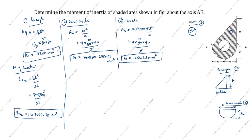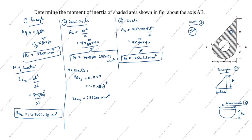Next, the moment of inertia of the semicircle about its centroidal axis is IAX2 = 0.11r⁴. With r = 40: IAX2 = 0.11 × 40⁴ = 281600 mm⁴. This is the centroidal moment of inertia of the semicircle.